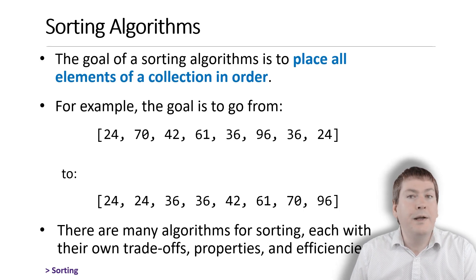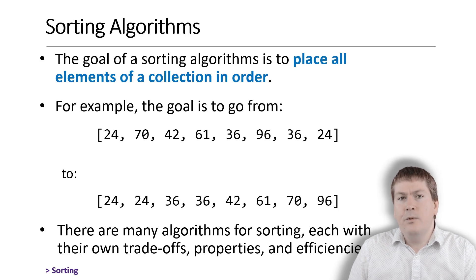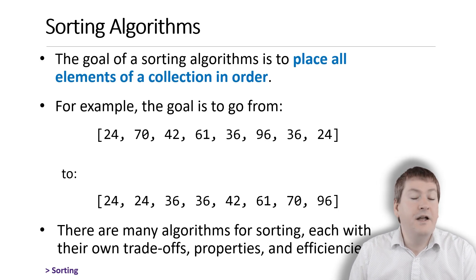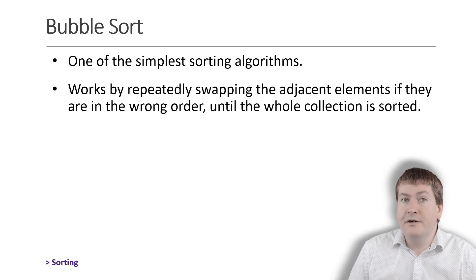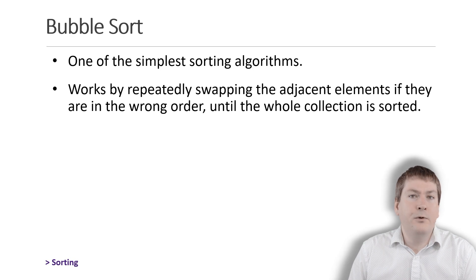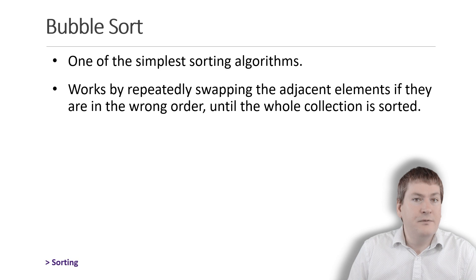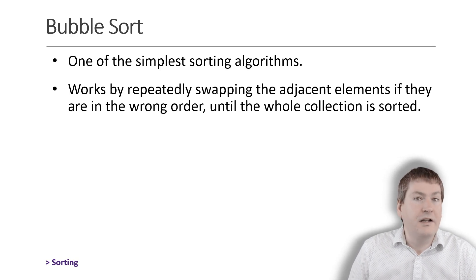This is in part why we have so many different sorting algorithms. Each one has its own trade-offs, properties, and efficiencies. The sorting algorithm we'll be taking a look at today is bubble sort. This sorting algorithm is notable mostly for its simplicity and being relatively easy to implement, which is why it's the first sorting algorithm most computer science students encounter and implement for themselves.